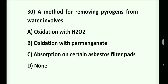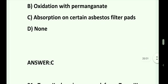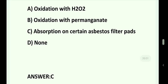Question number 30. A method for removing pyrogens from water involves: Option A. Oxidation with H2O2. Option B. Oxidation with permanganate. Option C. Absorption on certain asbestos filter pads. Option D. None. Answer is Option C. Absorption on certain asbestos filter pads.